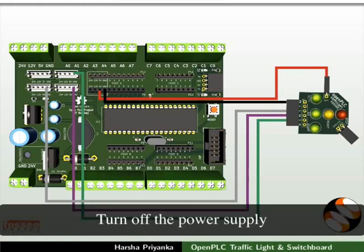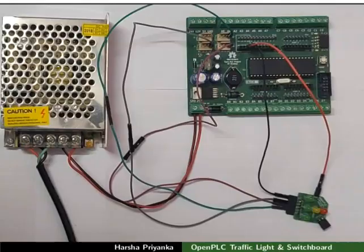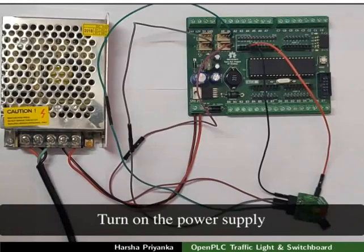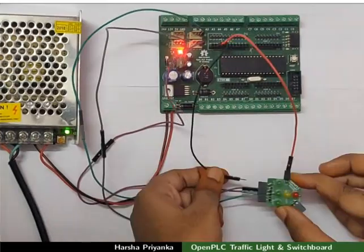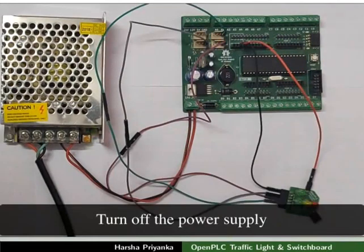Remember to turn off the power supply when you change or make new connections. After making all the connections, turn on the power supply of the mainboard. The red, yellow, and middle green LEDs will start glowing. Do not use I/O pins of the mainboard to power the pin marked plus 5V, because it may affect the intensity of the LED. Now, disconnect the EN pin — we can observe that all LEDs go off. Turn off the power supply.